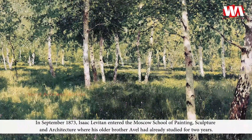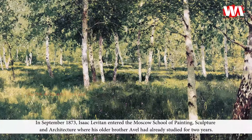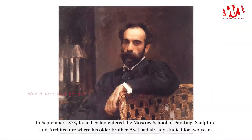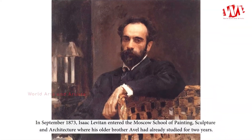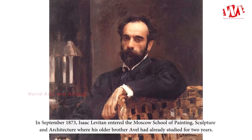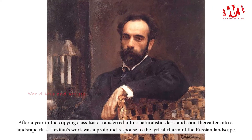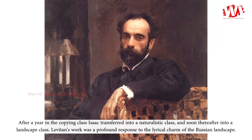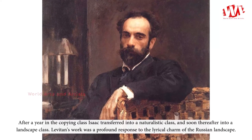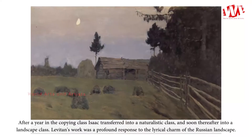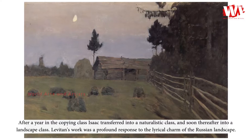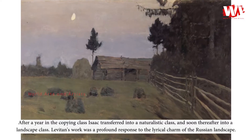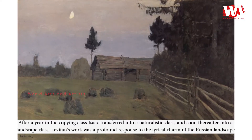Isaac Levitan entered the Moscow School of Painting, Sculpture and Architecture, where his older brother Avil had already studied for two years. After a year in the copying class, Isaac transferred into a naturalistic class, and soon thereafter into a landscape class.